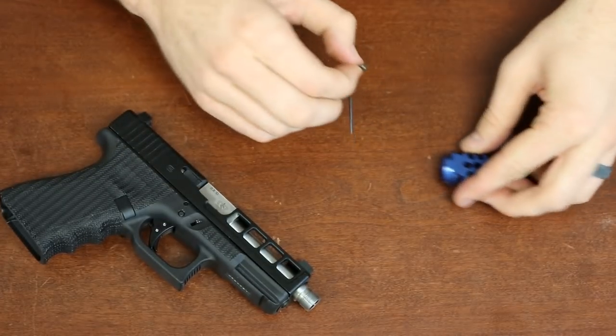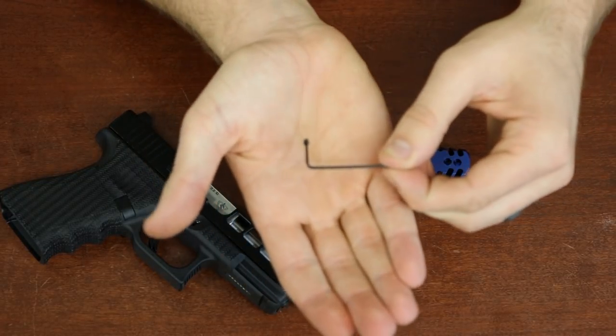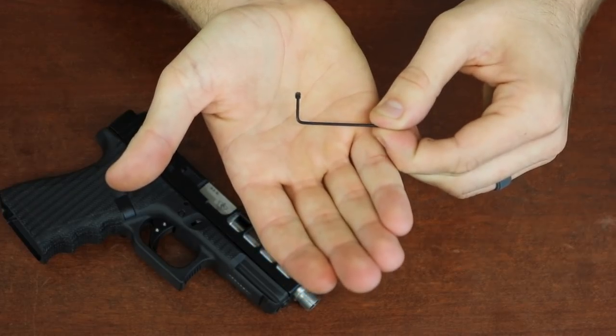It's going to come with an allen key, and also a set screw so we can get this thing tightened up for you.